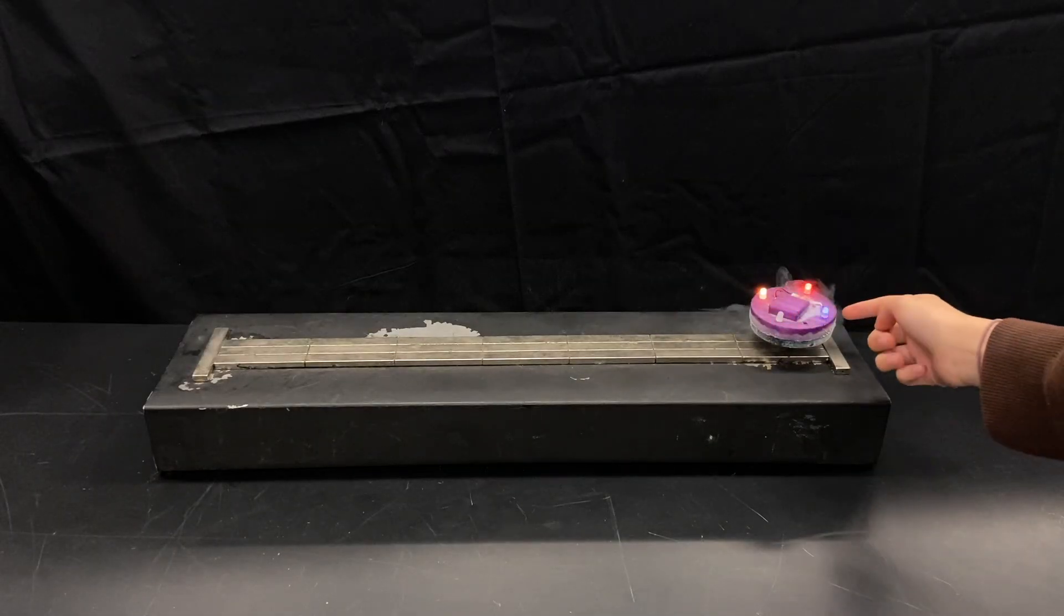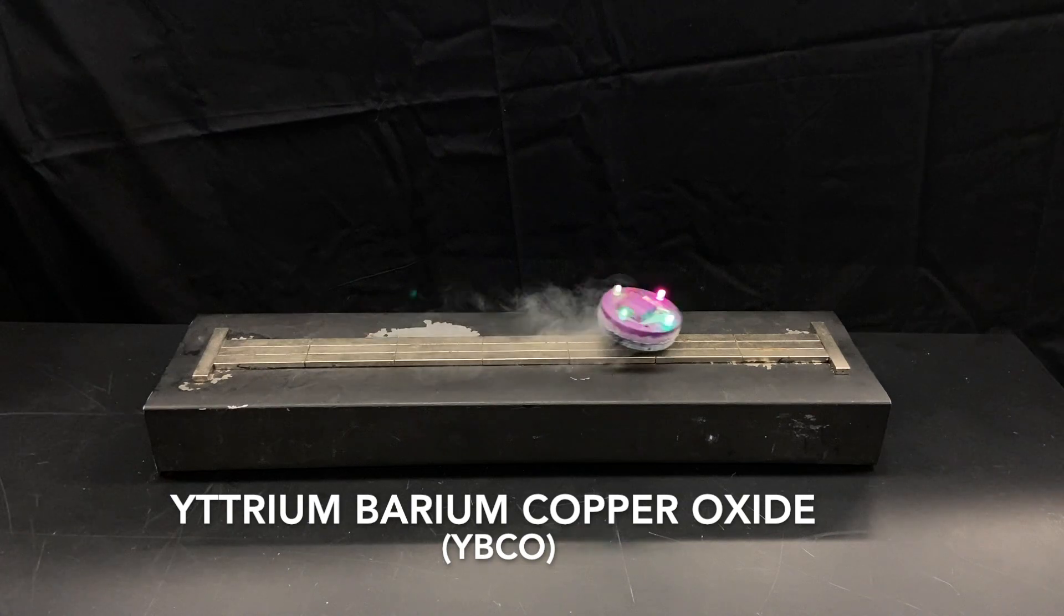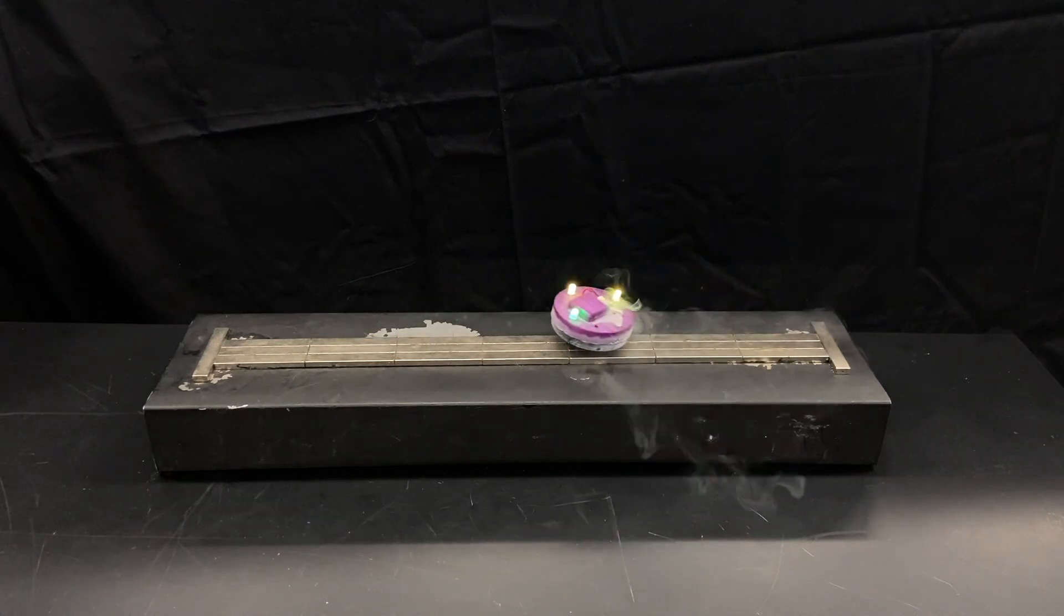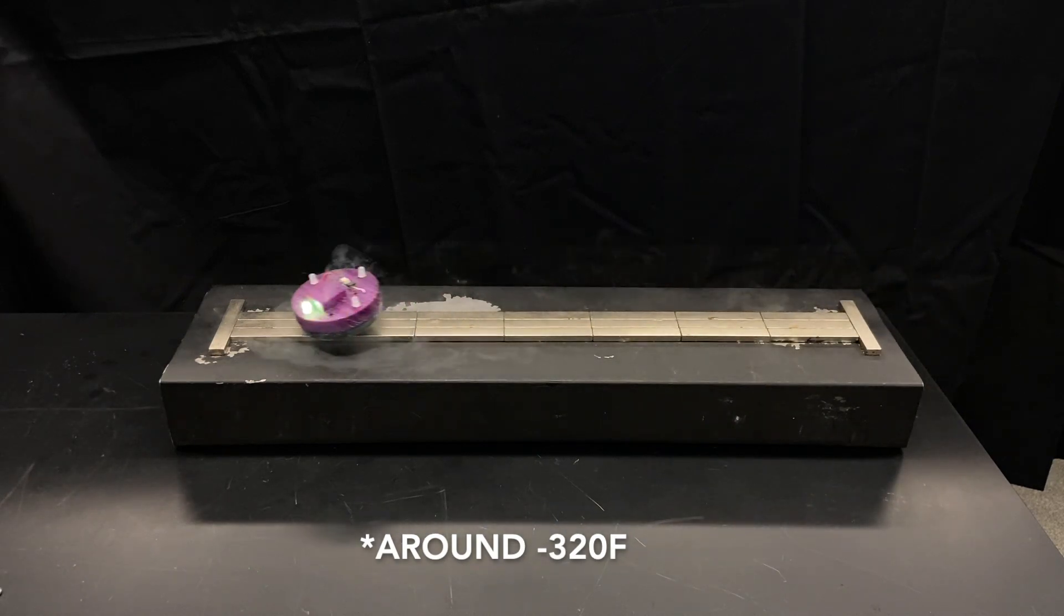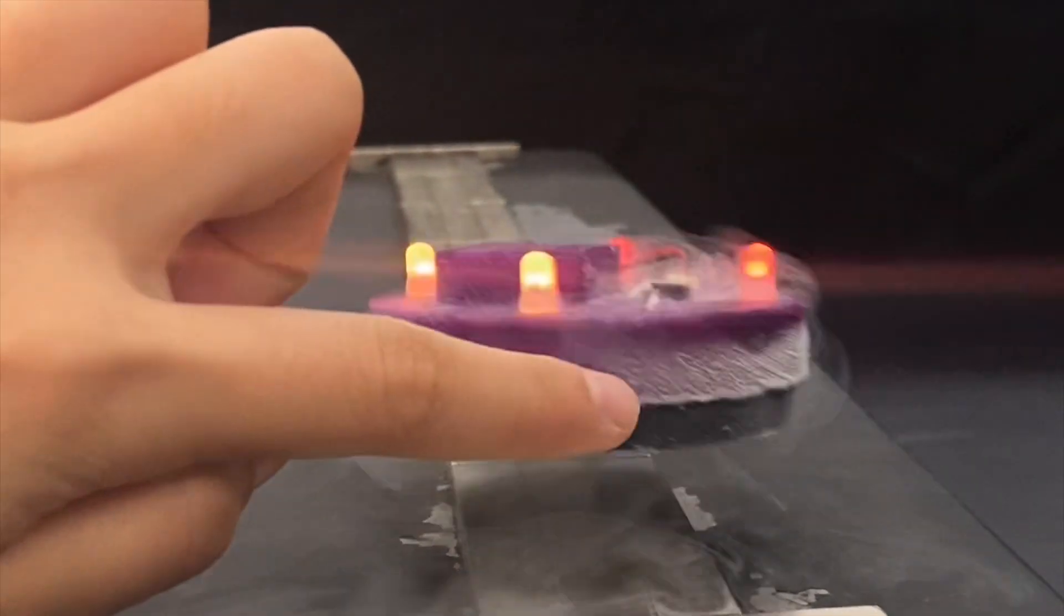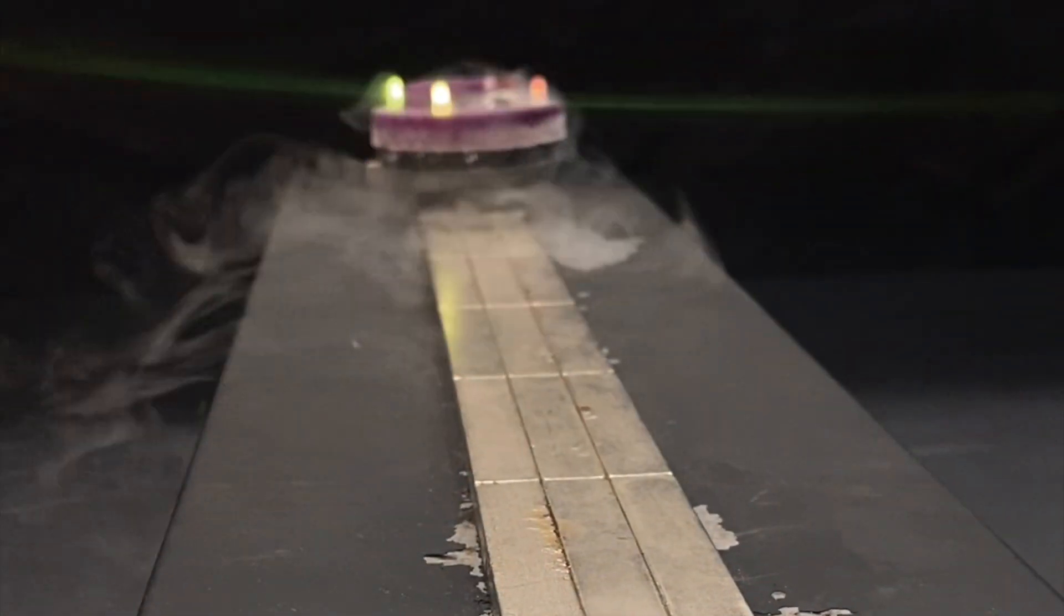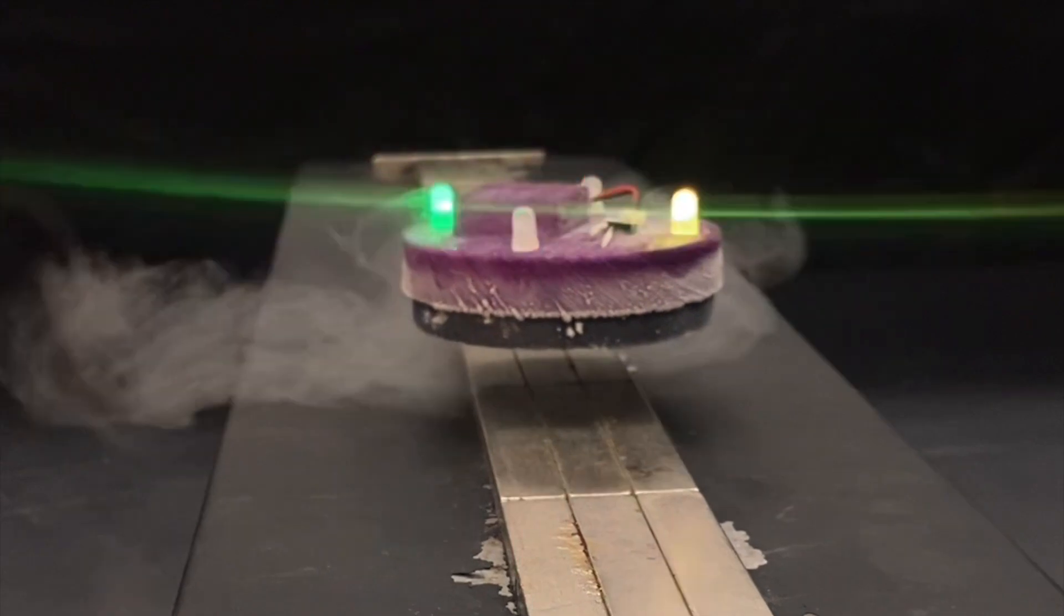The quantum levitator you see here has a very thin YBCO superconductor inside the puck. When submerged in liquid nitrogen around negative 196 degrees Celsius, the superconductor becomes extremely cold, and once it reaches below its critical temperature, we observe that it has zero electrical resistance. This is because electrons in the superconductor couple to form pairs, and current can pass through the material without losing any heat or energy.